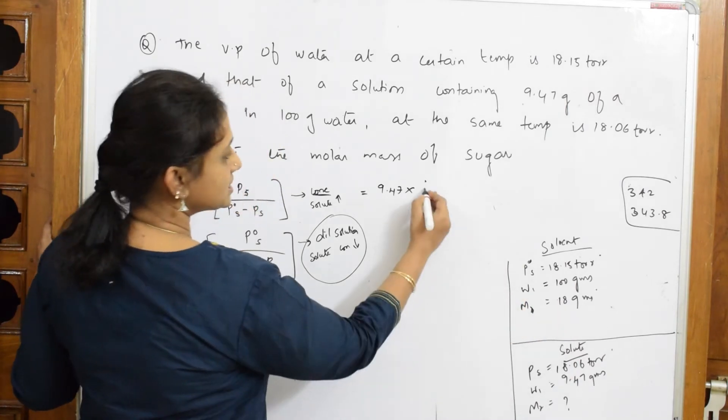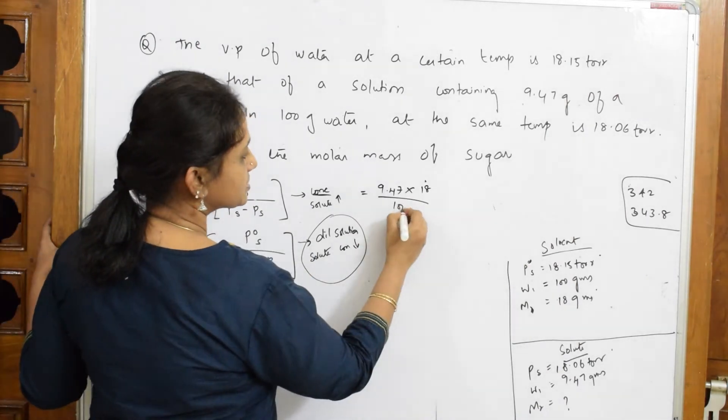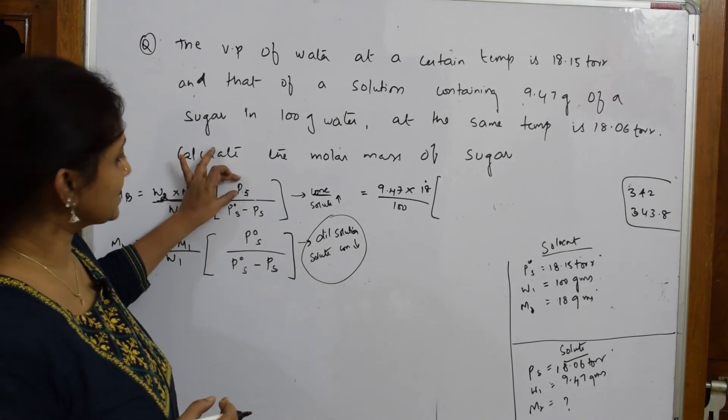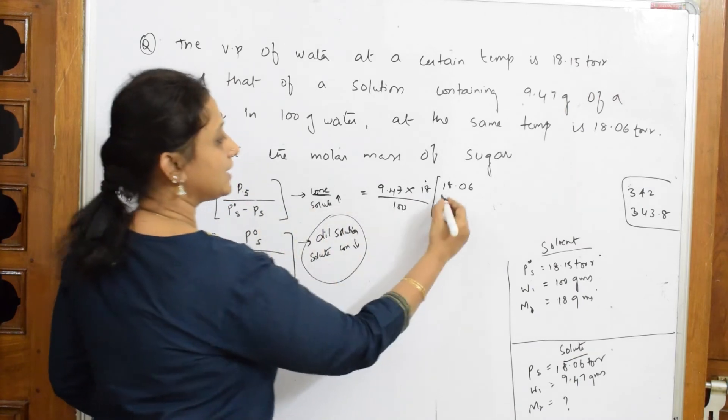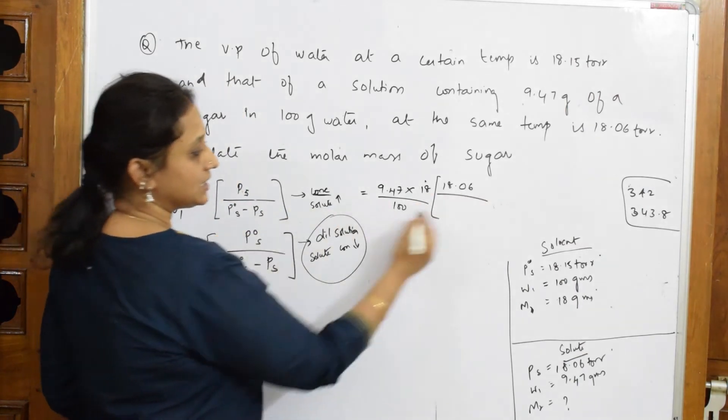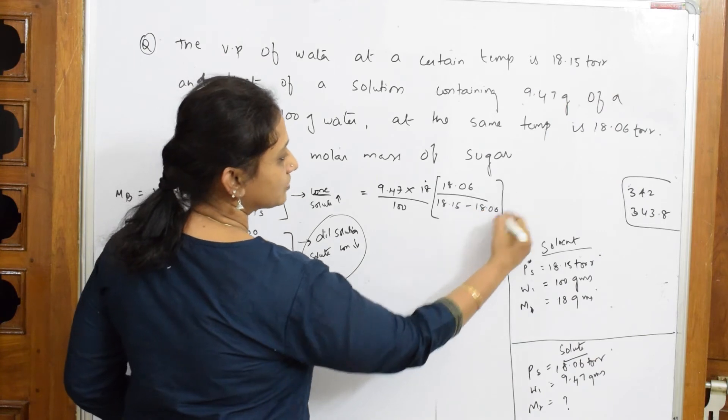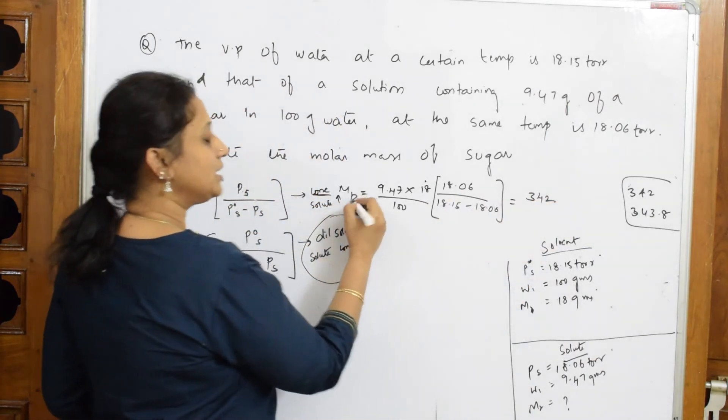M₁ given to us is 18 grams, divided by w₁ which is 100 grams. I am directly applying this formula; you will get the answer. So Pˢ is 18.06 torr divided by P₀ˢ minus Pˢ, which is 18.15 minus 18.06 torr. When I solve it, I get an answer of 344 grams per mole. Done.